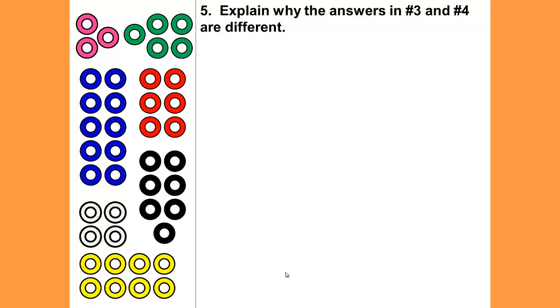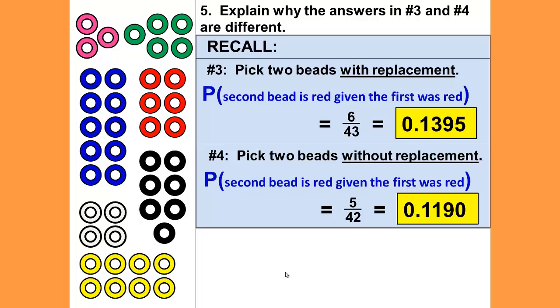Question number five: Explain why the answers in number three and number four are different. Recall that number three was picking two beads with replacement, and our answer was 6 out of 43, or 0.1395. And question number four was to pick two beads without replacement, and the probability of the second bead given that the first was red was 5 out of 42, which is equal to 0.1190.